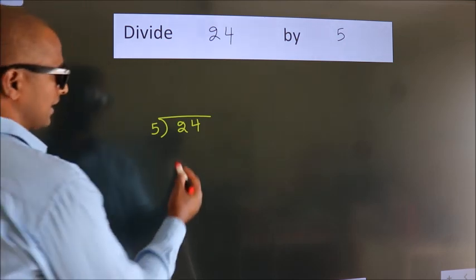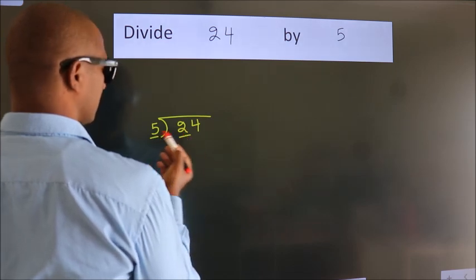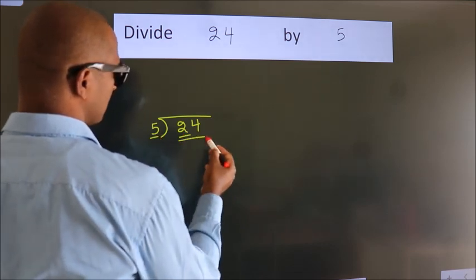Next. Here we have 2. Here 5. 2 is smaller than 5, so we should take two numbers: 24.